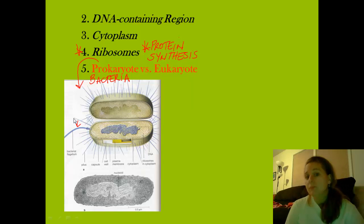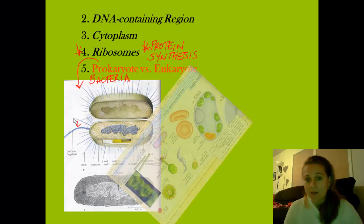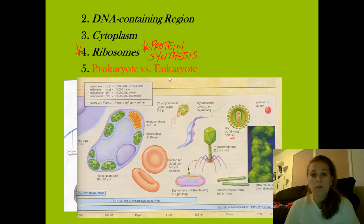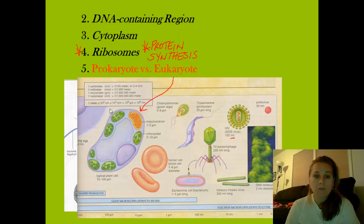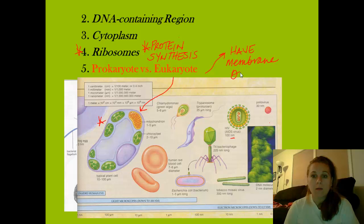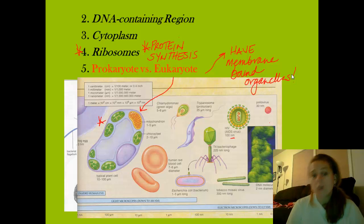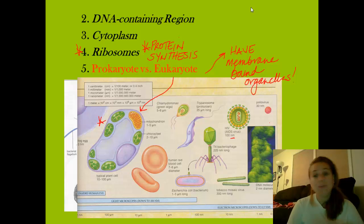Eukaryotes are probably what you learned about in middle school when you talked about cells — these are the cells that have it all. Eukaryotes differ from prokaryotes in that they have all of those membrane-bound organelles. This cell here is a typical plant cell. The big difference is that eukaryotes have membrane-bound organelles: a nucleus, mitochondria, and chloroplasts if they're a plant cell. Prokaryotes don't have those — they have ribosomes, a DNA region, cytoplasm, and a cell wall.